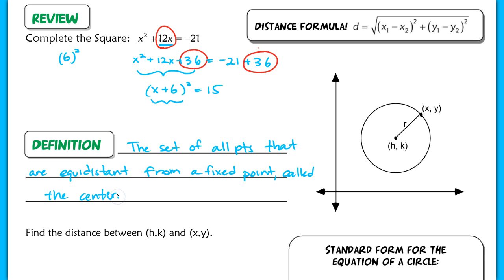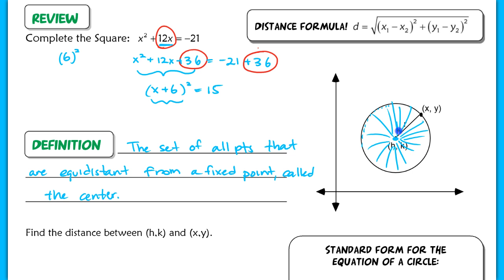Every single point equidistant from the fixed point forms the circle. That equidistant measure would be considered the radius of the circle.